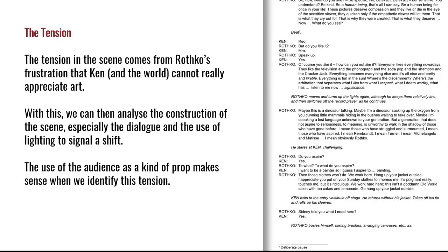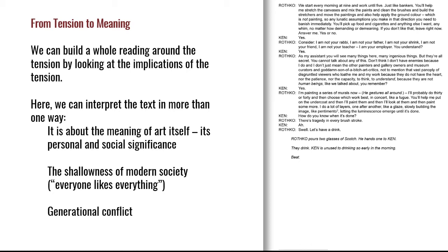How do we move from tension to meaning? We can build a whole reading around the tension by looking at its implications. Here we can interpret the text in more than one way: it's about the meaning of art itself, its personal and social significance; or about the shallowness of modern society, especially when Rothko says 'everyone likes everything'; or we can talk about generational conflict between young Ken and Mark Rothko. All of this comes from that one tension of Rothko being frustrated at society's lack of understanding about art.